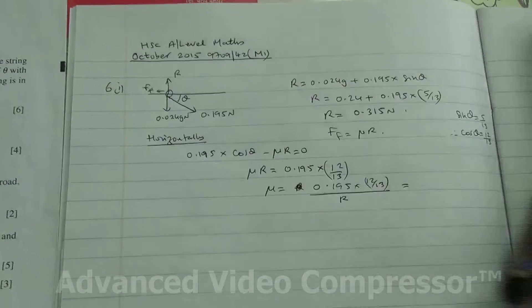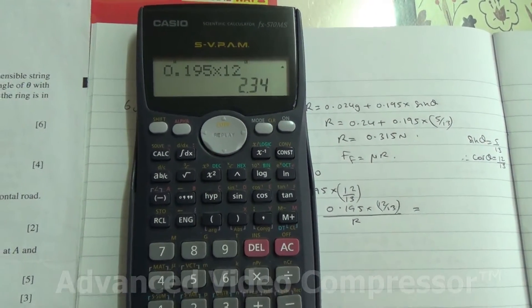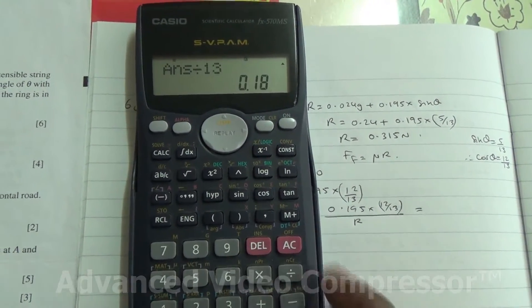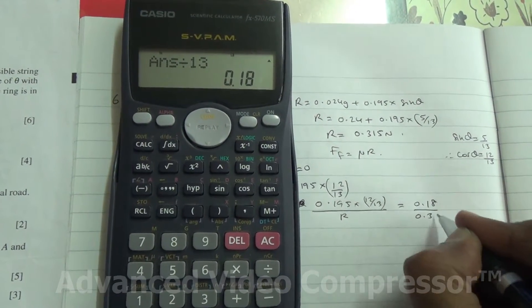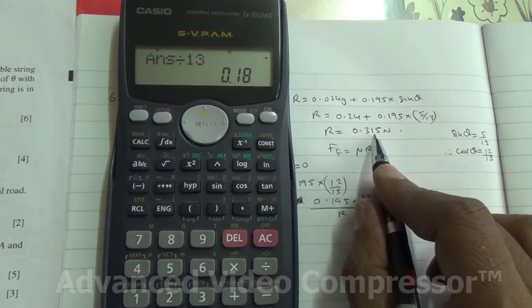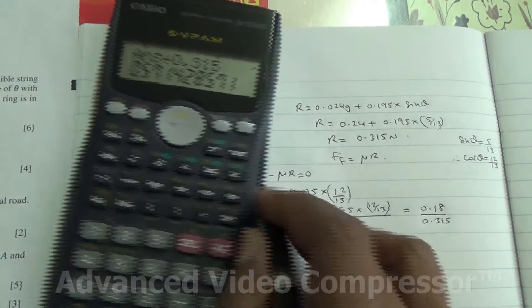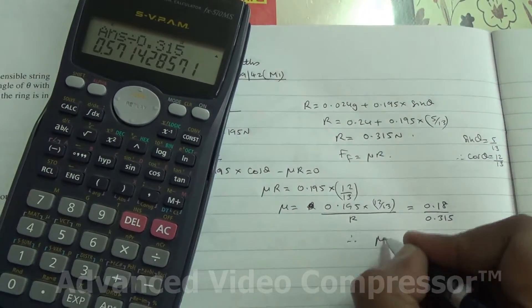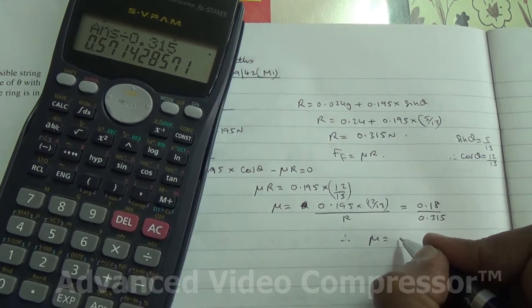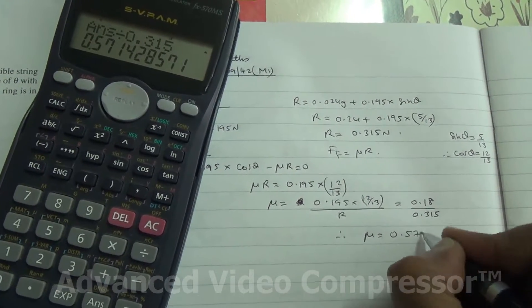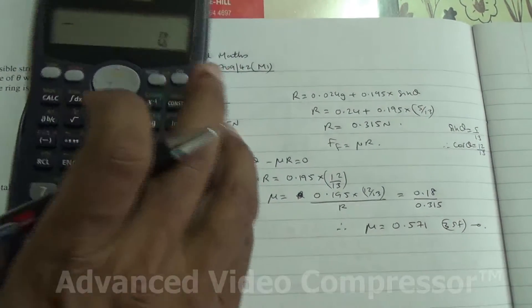So 0.195 times 12 divided by 13. So that's going to be 0.18 divided by 0.315 as found earlier on. So divided by 0.315 is going to give us this much. Therefore, the coefficient of friction, mu, is going to be 0.571 to 3 significant figures. So here we are for the first part of the question.